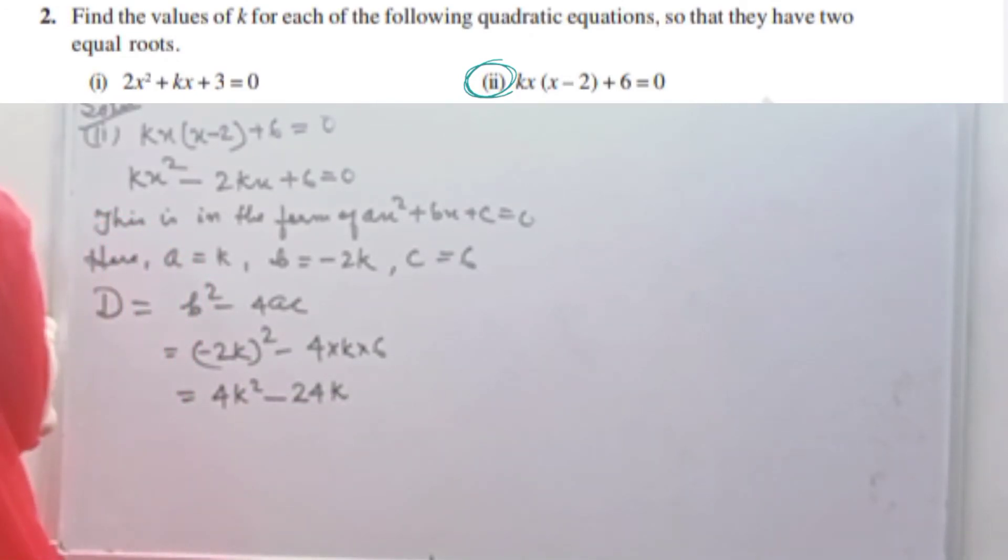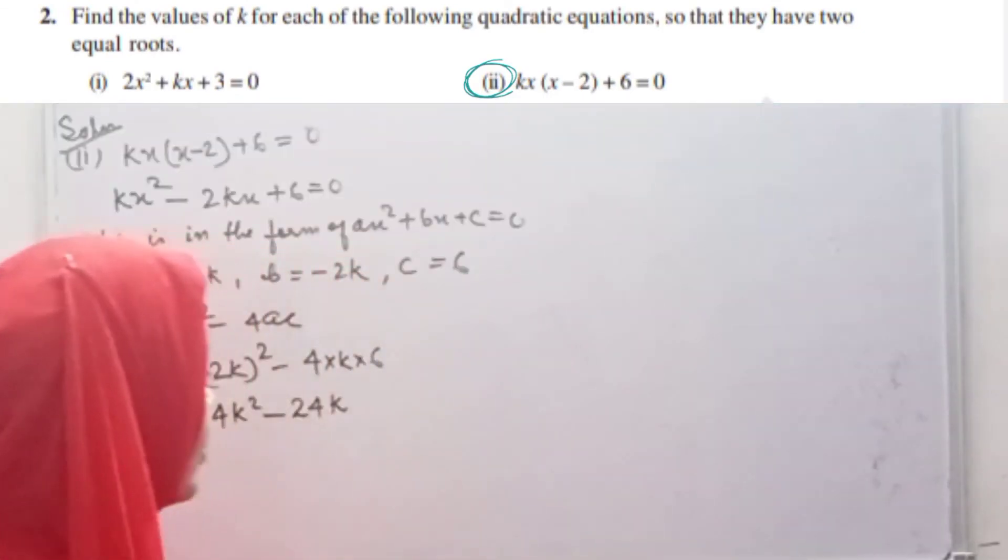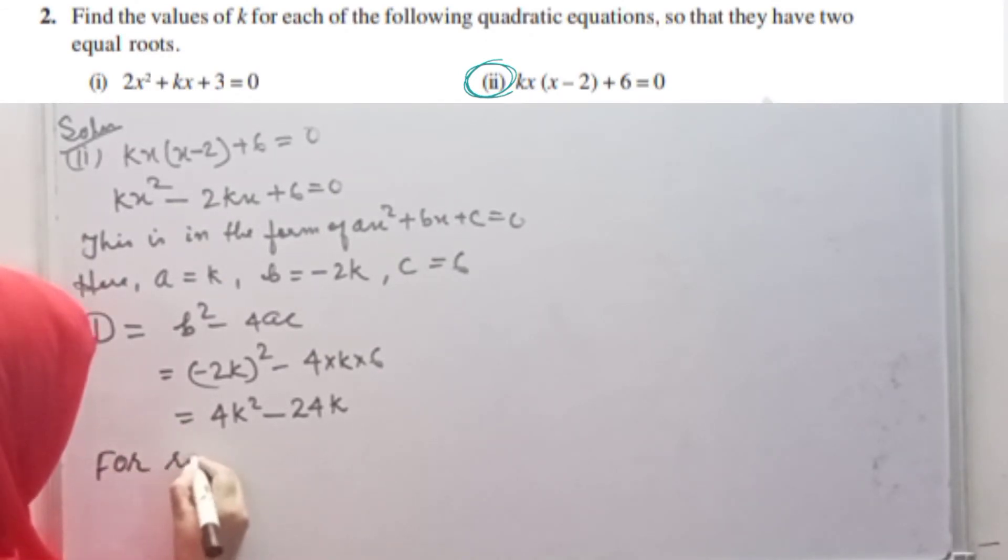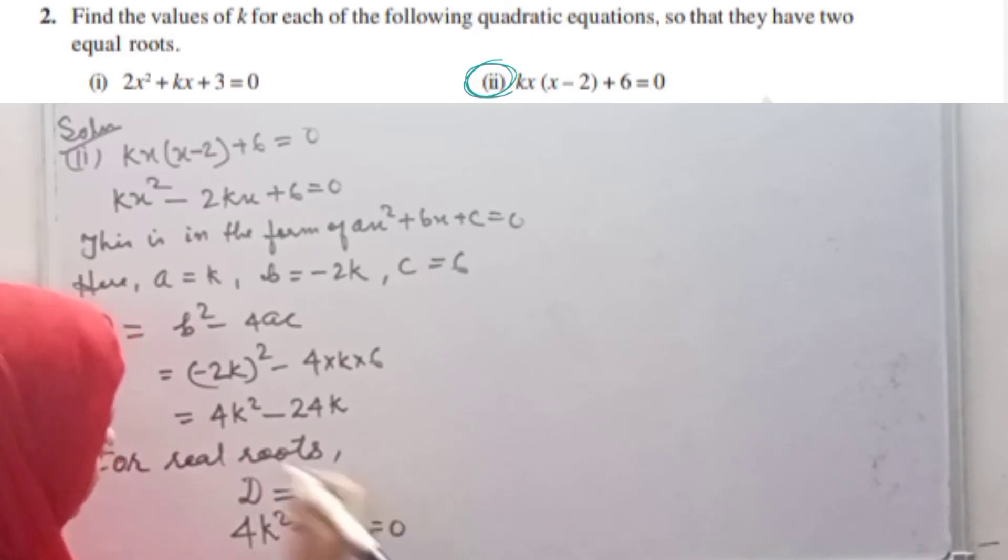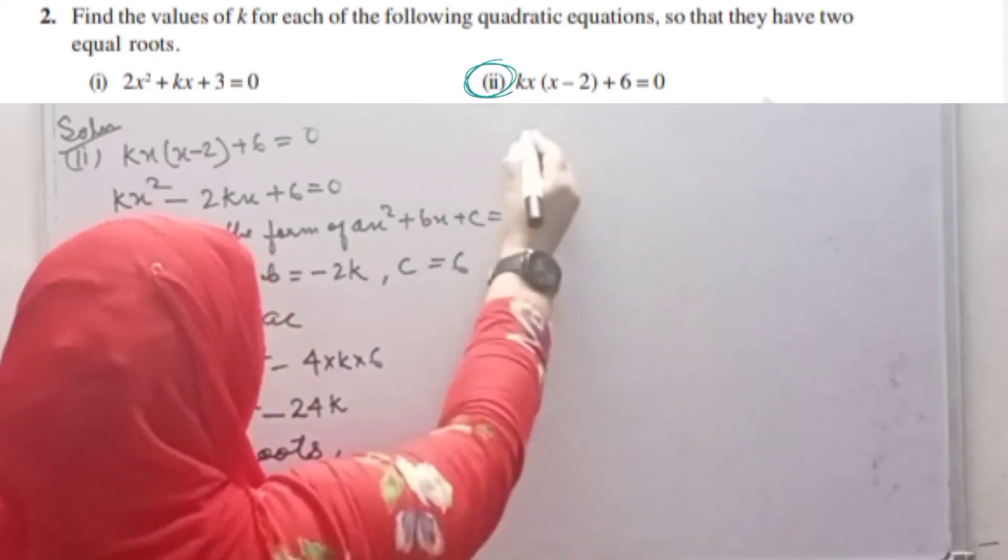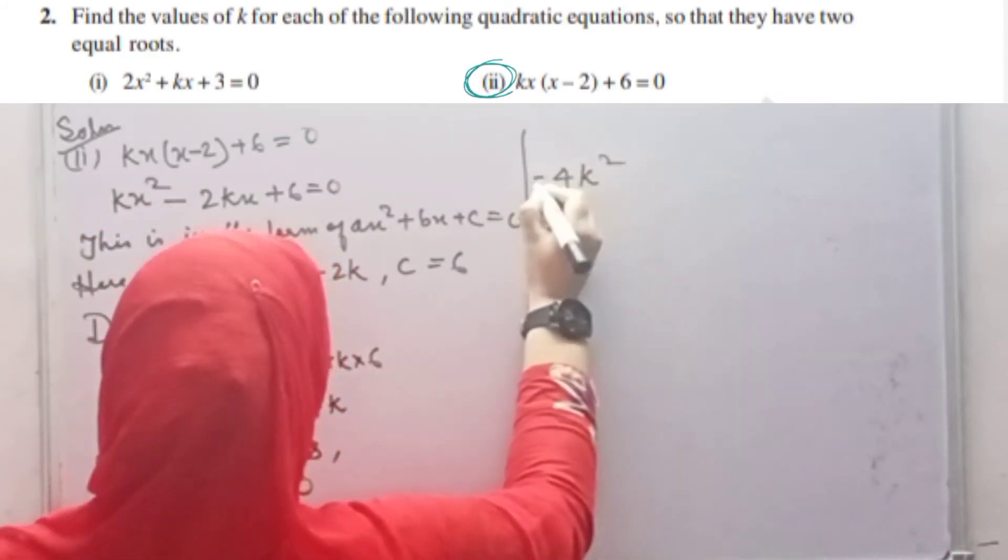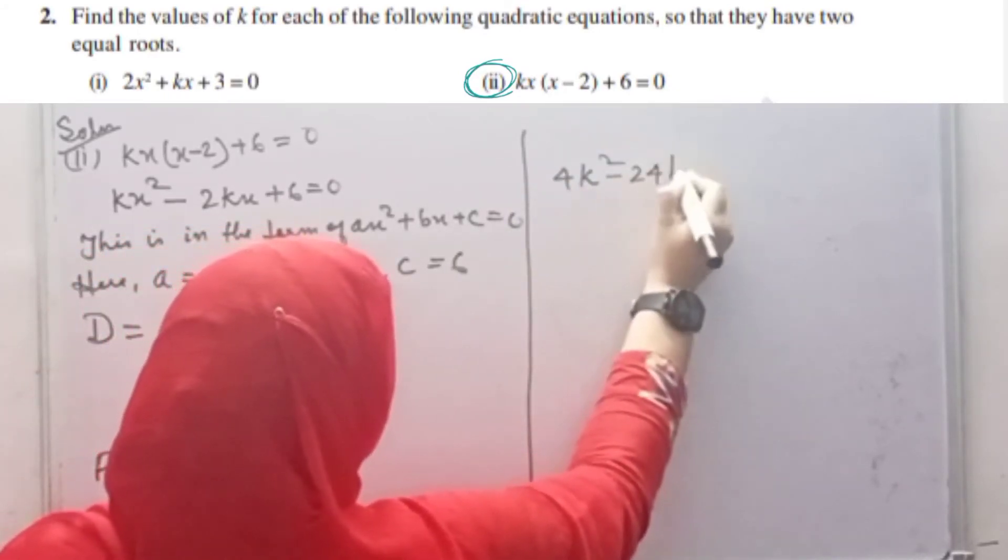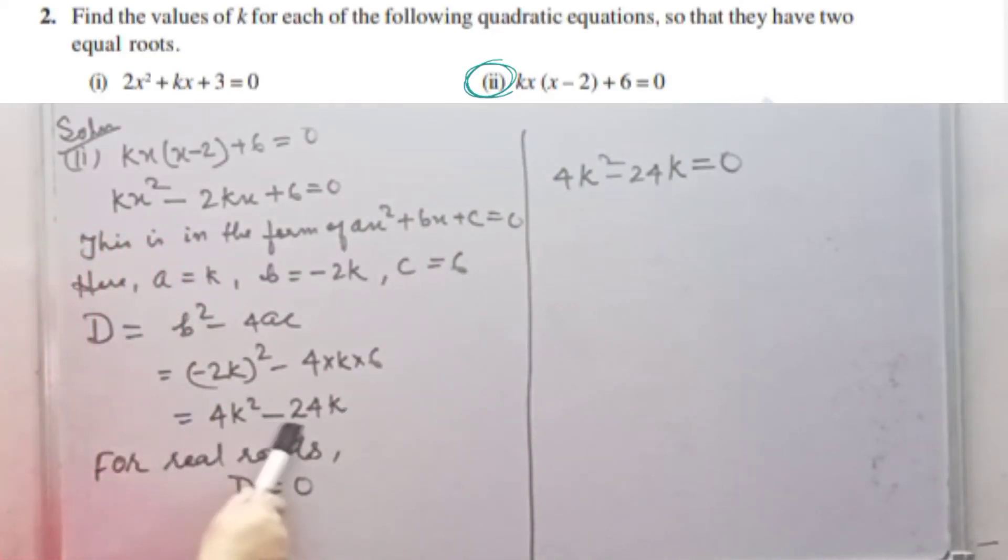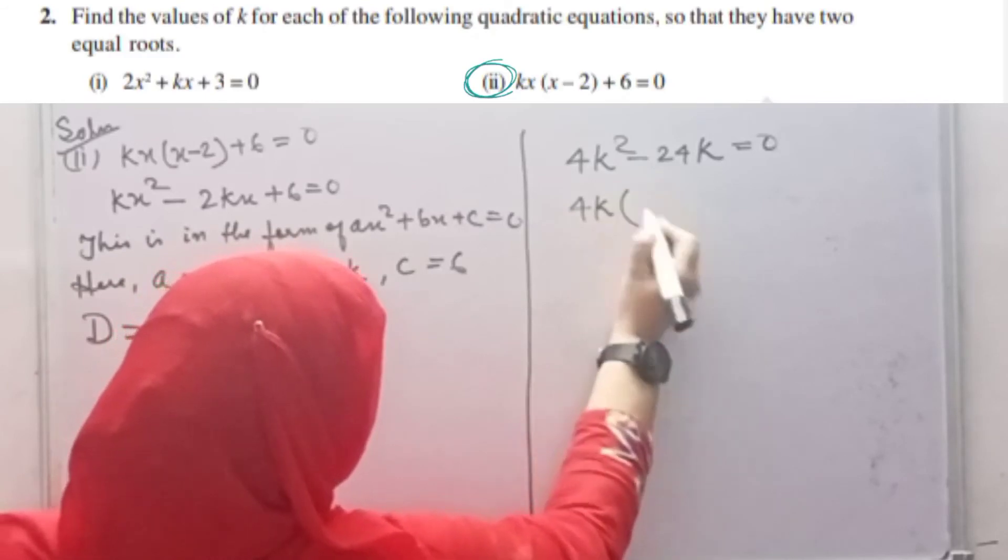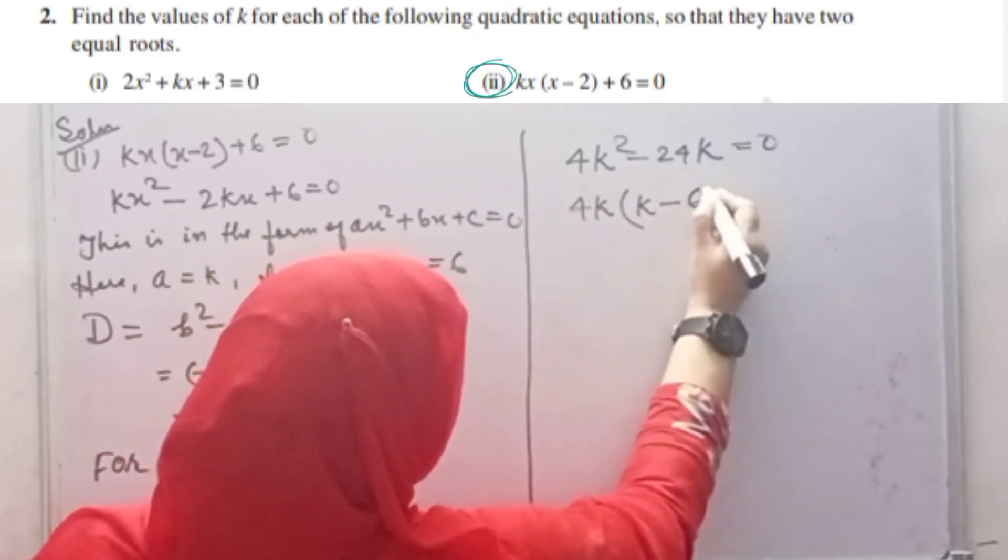But also, the question is saying we have to find the value of k for equal roots. For equal roots, D should be equal to 0. And what is the value of D? 4k square minus 24k, and that is equal to 0. So 4k is common. What is left? k minus 6. Equals to 0. So 4k equals to 0 and k minus 6 equals to 0.